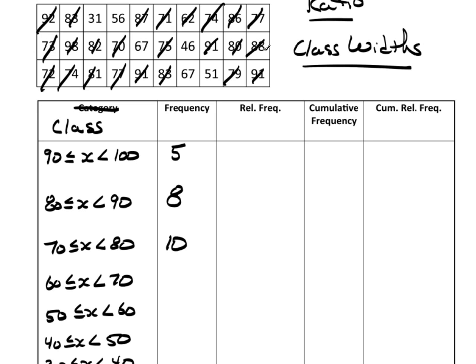The 60s, let's see, one, two, three. The 50s, there's one, two. The 40s, it looks like there's only one. And there's one in the 30s.